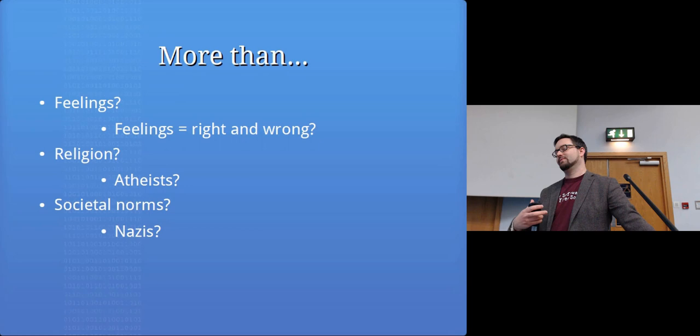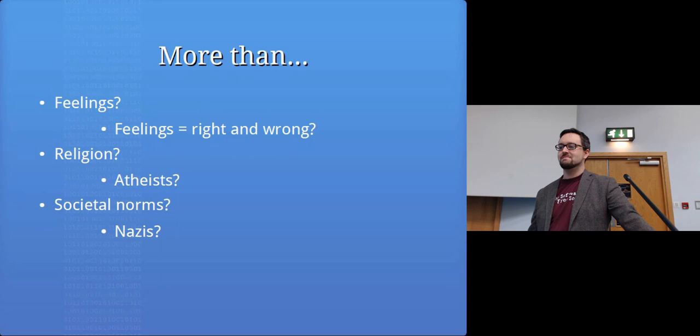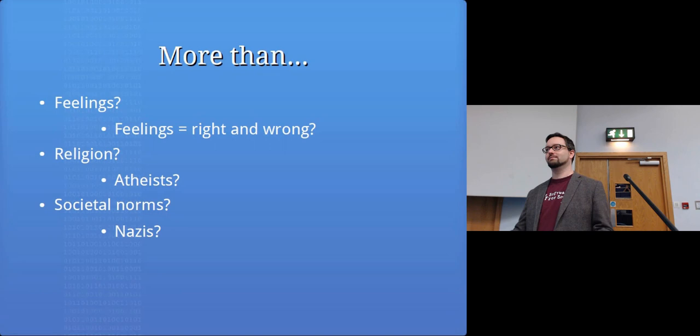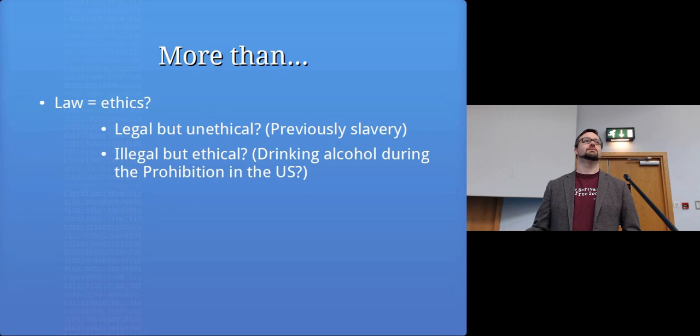There are a few ways to look at ethics. Whether something's right and wrong relates to how you feel about it. Sometimes people bring religion into it. You have to ask: is it possible for an atheist to be moral, to be ethical? Some say ethics is about societal norms and what's accepted, but you just have to look at examples like Nazi Germany to point out that just because everyone believes something is okay doesn't mean it necessarily is right.